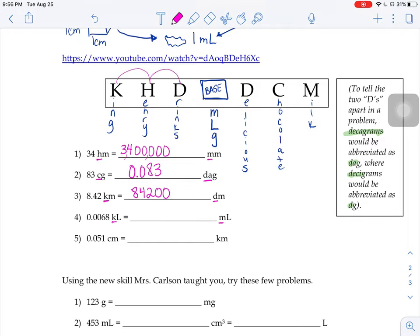If we are going from kiloliters to milliliters, we're on the K and we want to get to the M. So one, two, three, four, five, six steps to the right. Sixty-eight hundred.